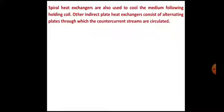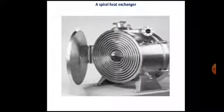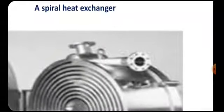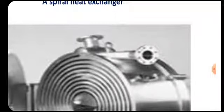Since there is no direct contact of steam with medium, it is called an indirect heat exchanger. This is the diagram of a spiral heat exchanger made of stainless steel. There are two ends: one through which medium enters inside and one which is the outlet.